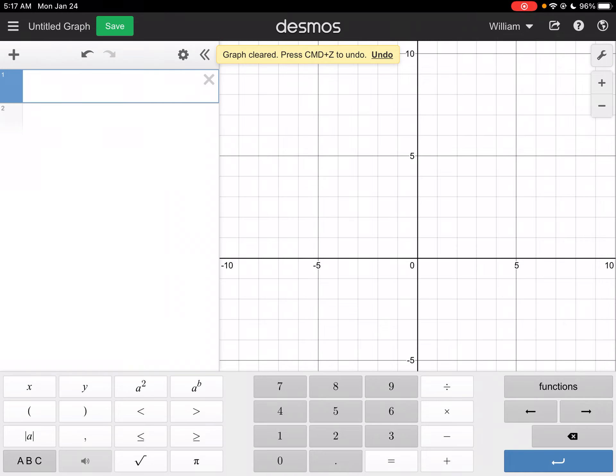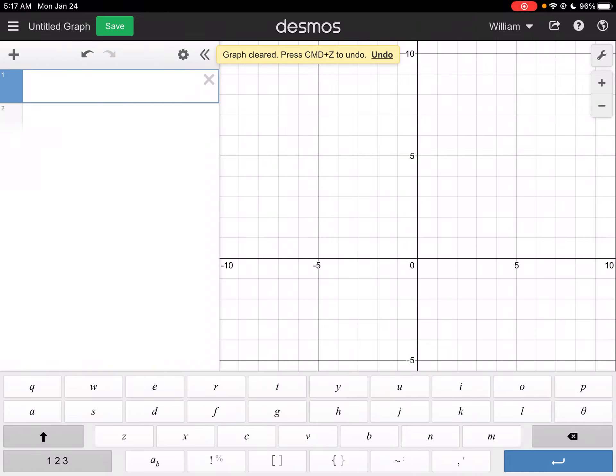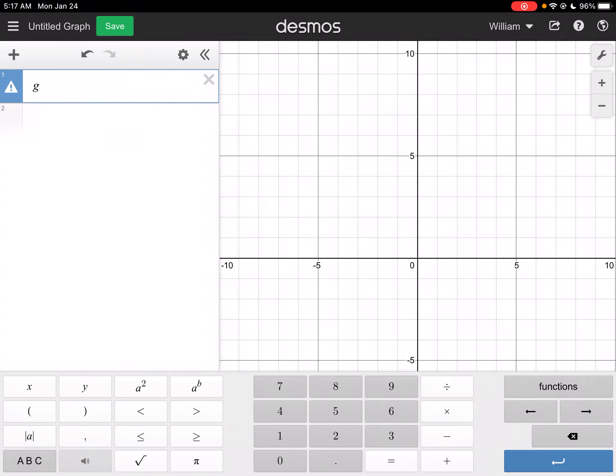And I'm going to go g of x equals x cubed minus 6x squared plus 12x and then minus 8.